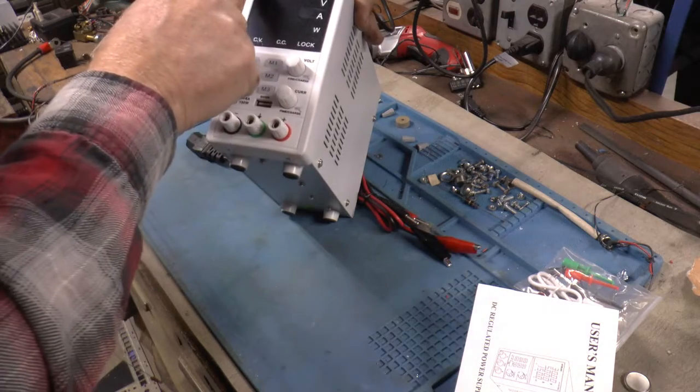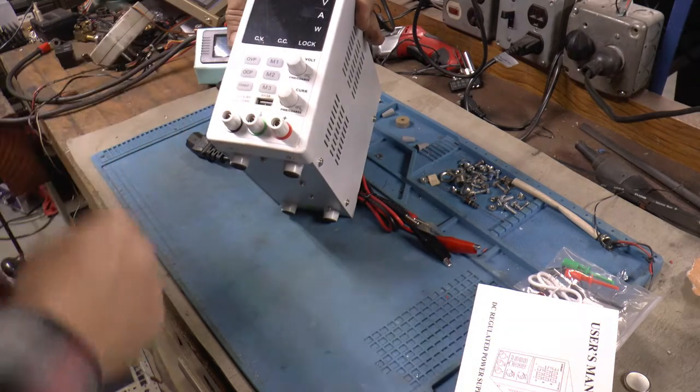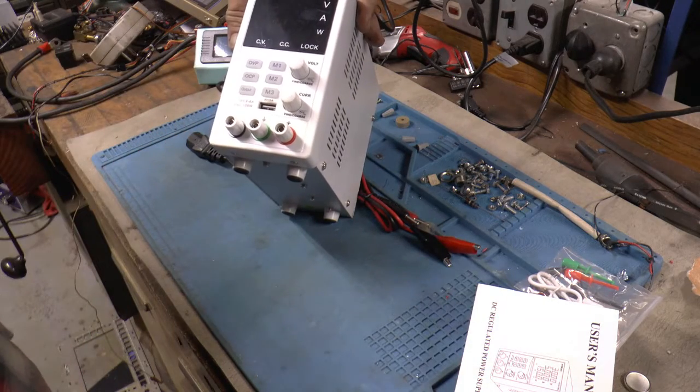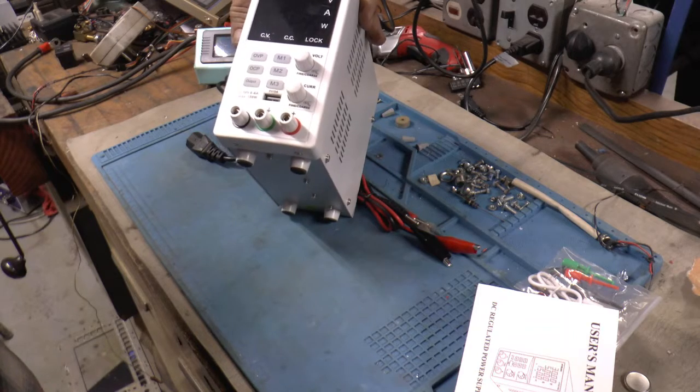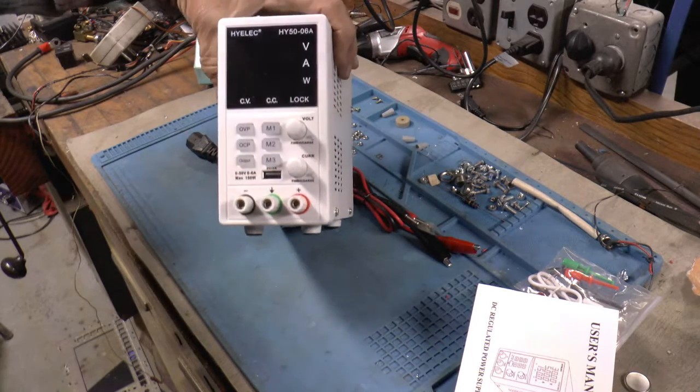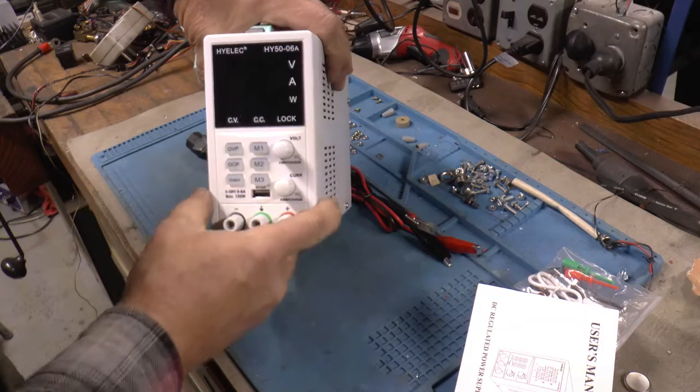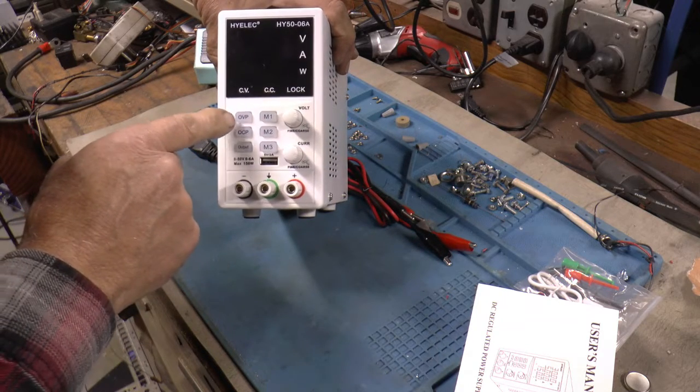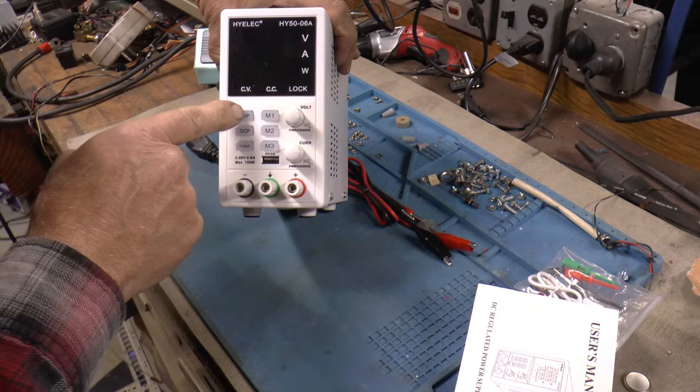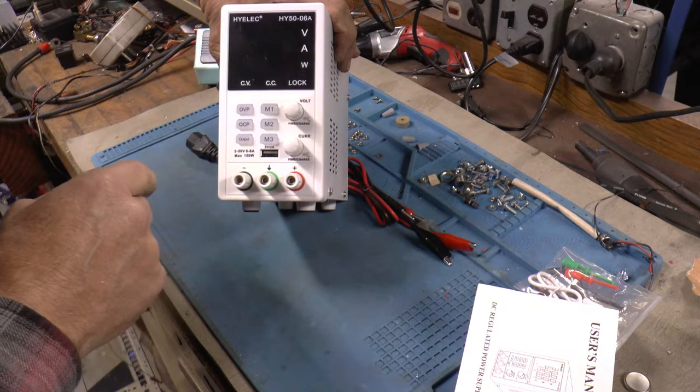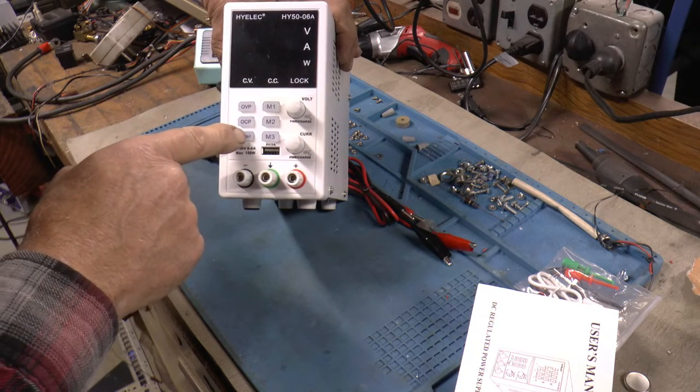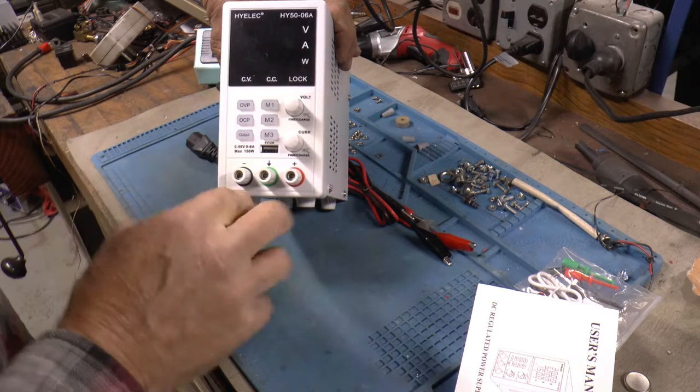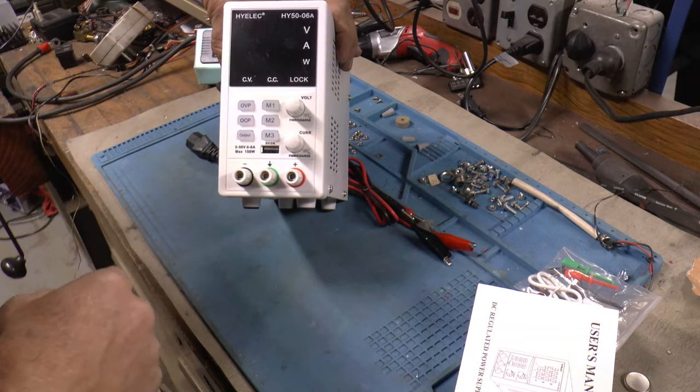So it's a Hylic HY50-6. Supposed to be 50 volts, 6 amps. It's got some memories, constant voltage, constant current. And this one has a switch so you can turn the leads on and off.